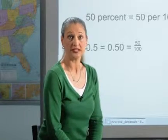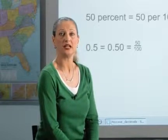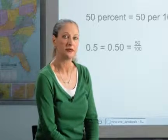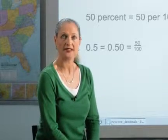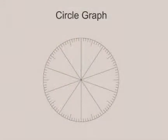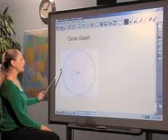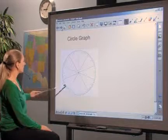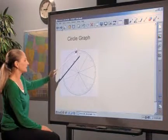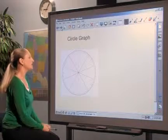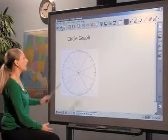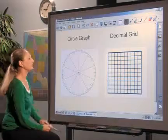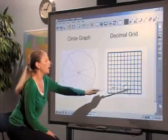Two common models can be used to help strengthen student understanding of the relationships between decimals and percents: circle graphs and decimal grids. Discuss with students that percents are often represented by circle graphs, which can be constructed by dividing a circle into 100 equally sized segments. Have students discuss similarities between this model and a decimal grid divided into 100 hundredths.